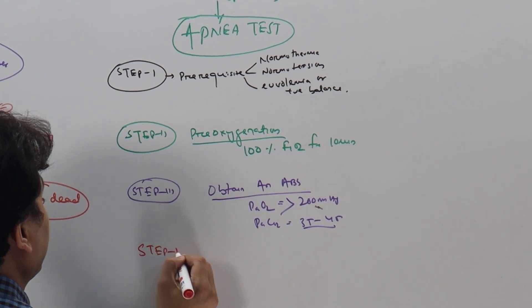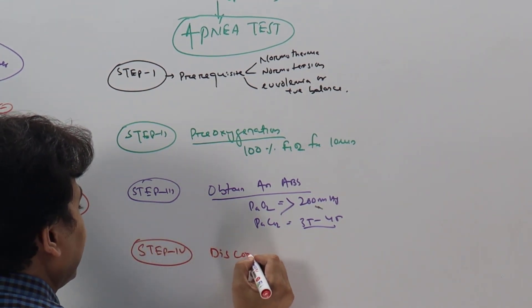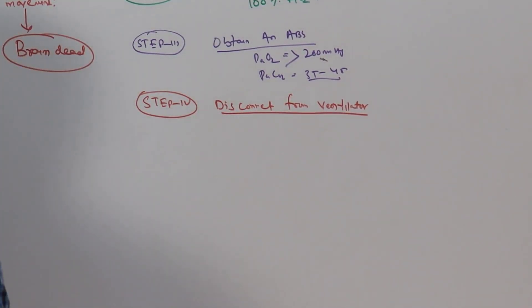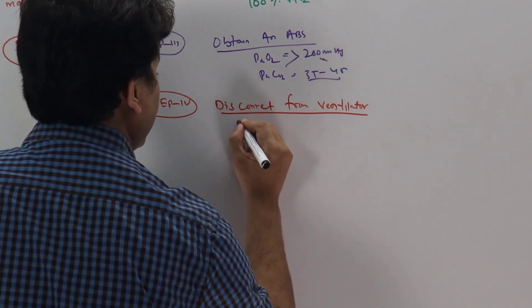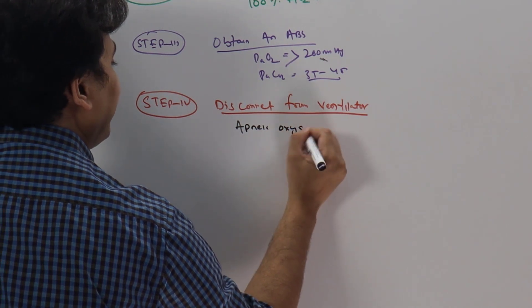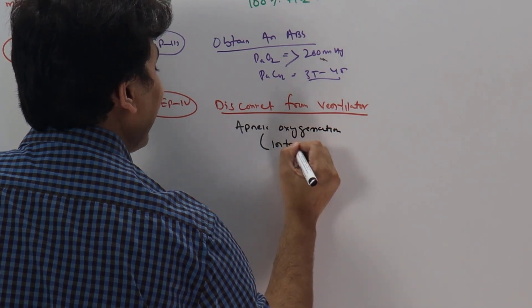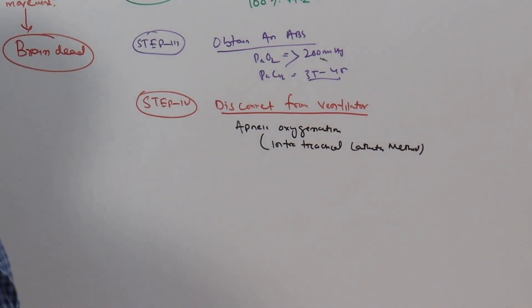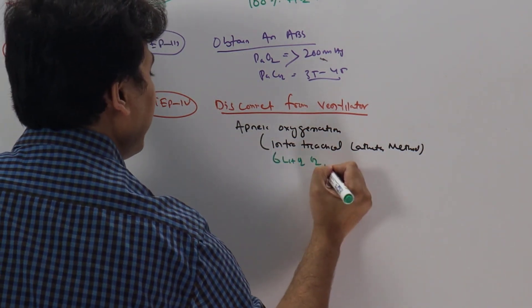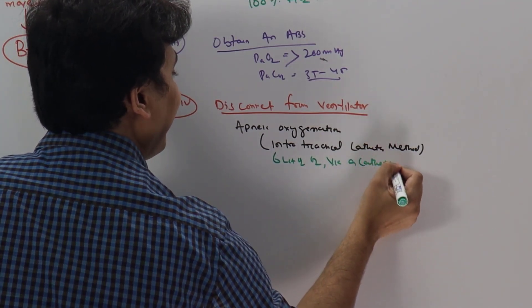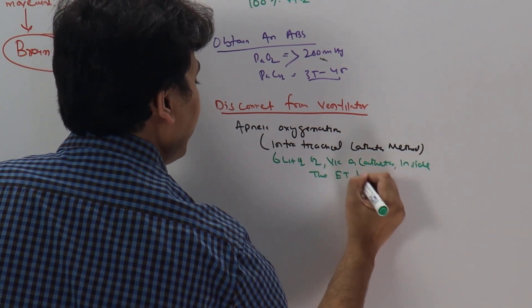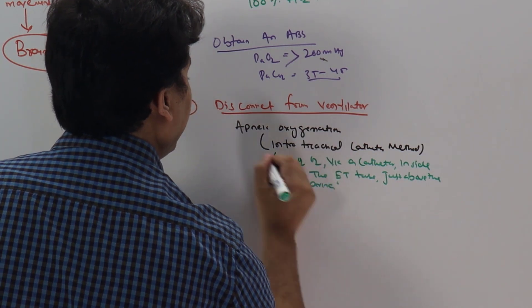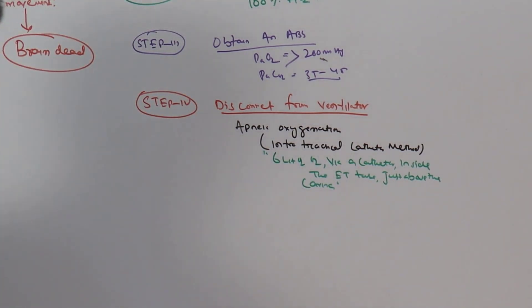Step 4 is the apnea test proper. Disconnect from ventilator and provide what we call apneic oxygenation. How to provide this? The usual method is intratracheal catheter method. Here, we give 6 liters of oxygen via a catheter inside the ETT just above the carina.